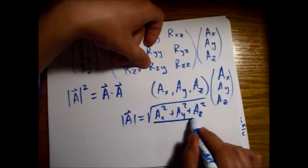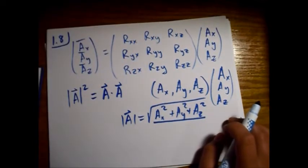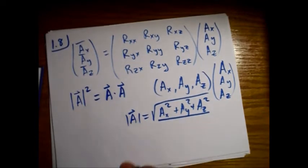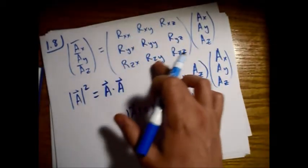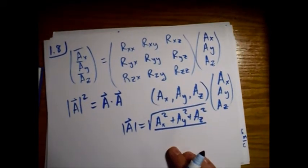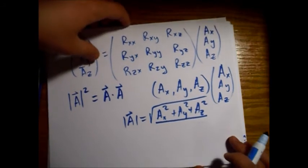this dot product, you end up with A_x squared plus A_y squared plus A_z squared, which, we know if we take the magnitude, it's just the square root of that. So this sum underneath the radical there has to be constant if we want this magnitude to be constant. So again,